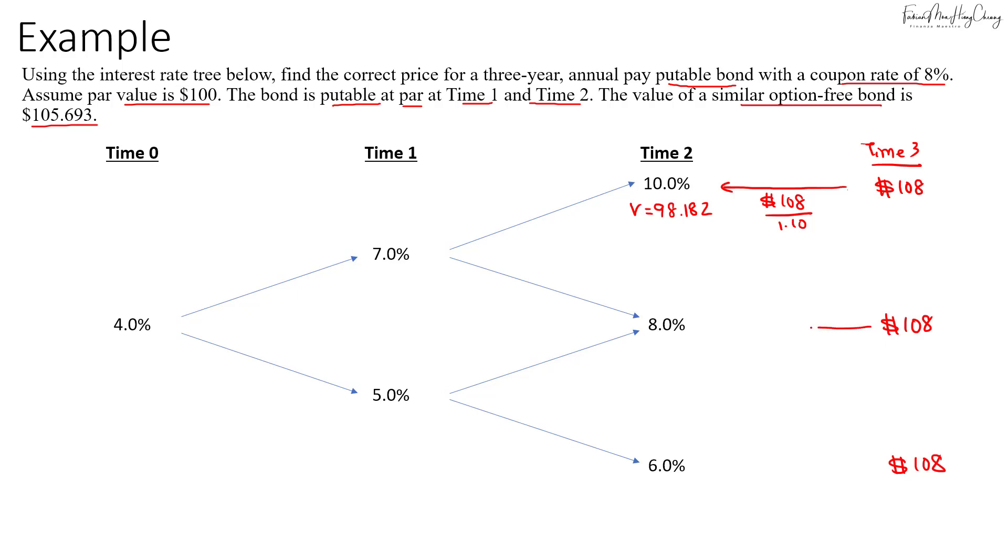For $108 here, we'll discount it back at 8%, which gives us $100. And for the last $108, we discount it back at 6%, which gives us $101.887.